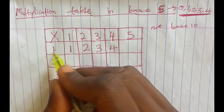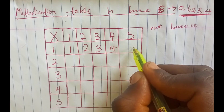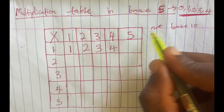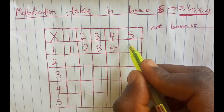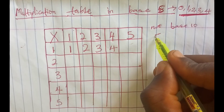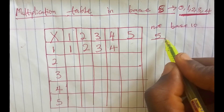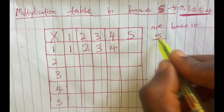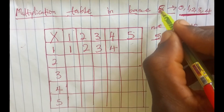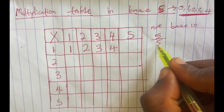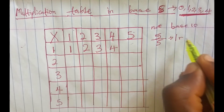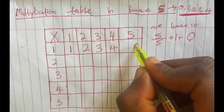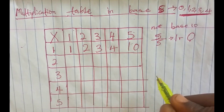For 1 times 5, we cannot write 5 because there is no number 5 in base 5. So whatever we get, we divide by the base we are working with — that is 5. So 5 divided by 5 gives us 1 remainder 0. We write the remainder 0 and carry the 1.